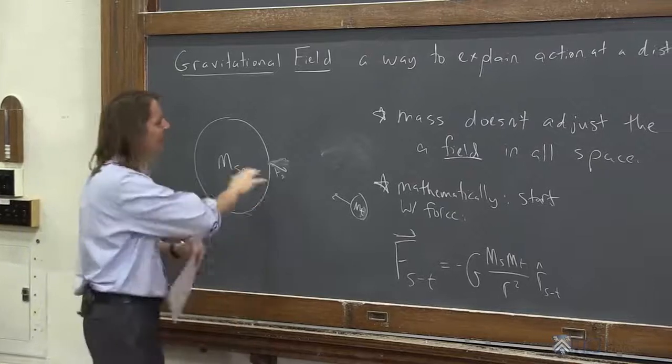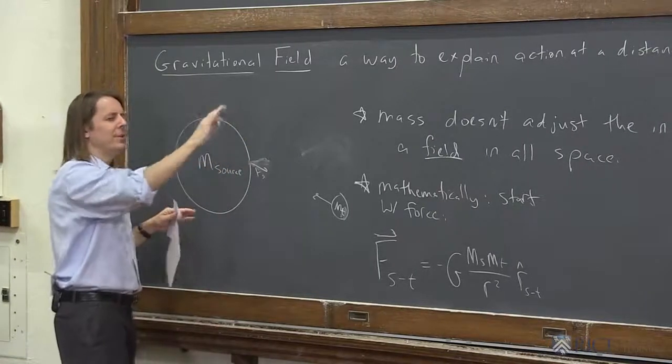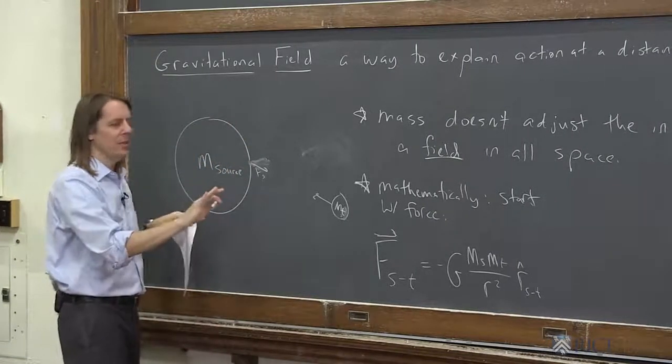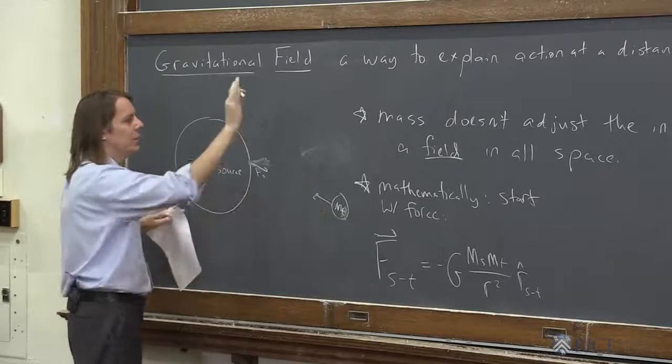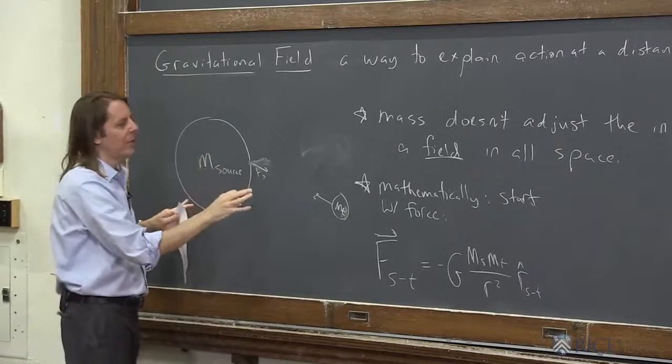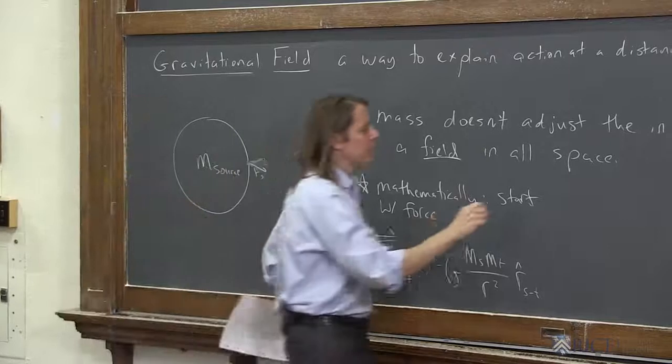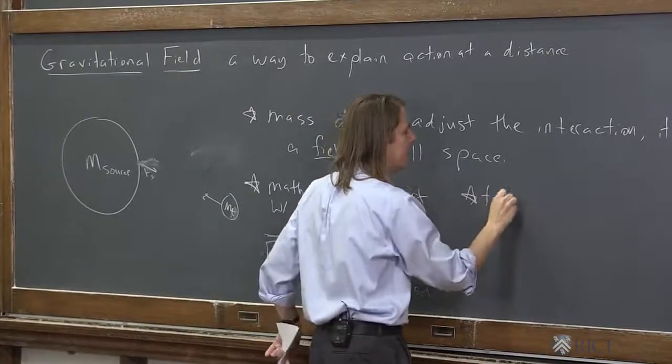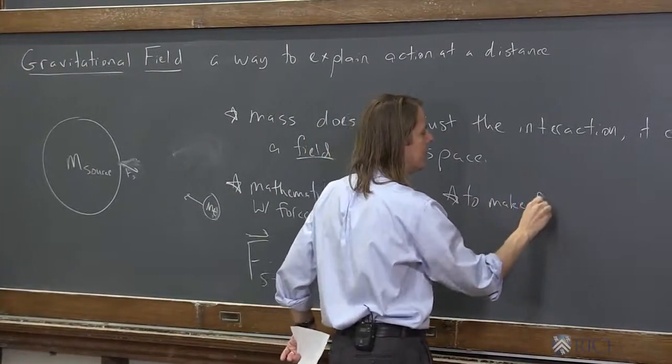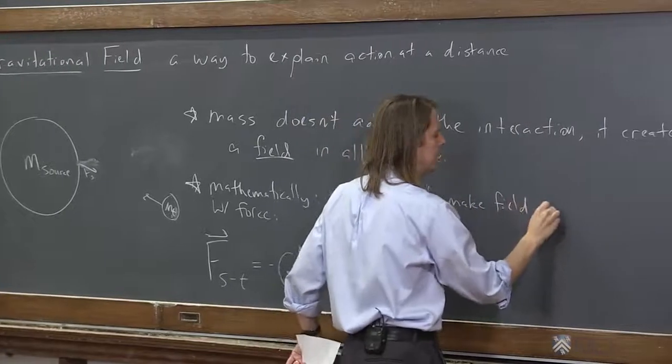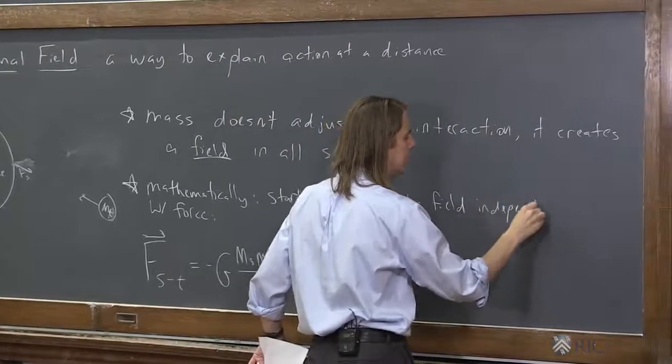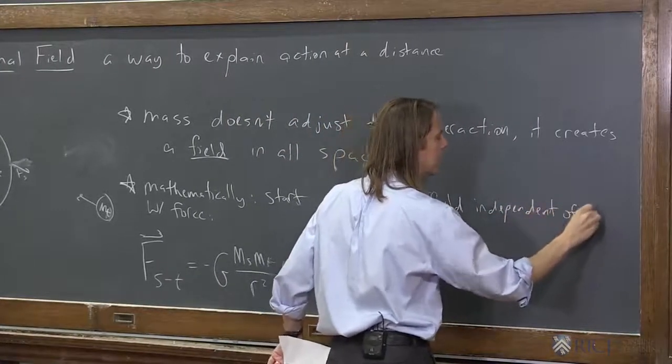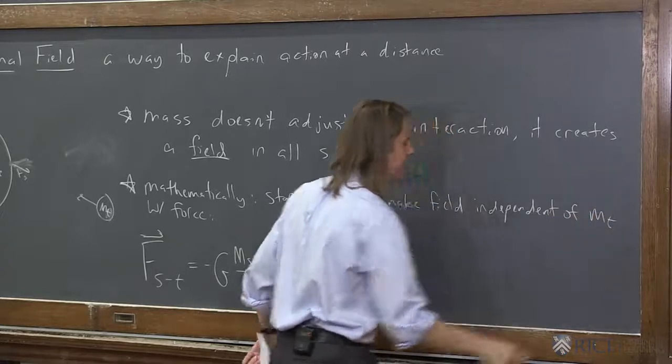So to turn this into a field, you can't really say the field needs to be something independent of everything else, independent of what the mass is, where it is. It's just something in space. So to do that, make the field independent of M test.